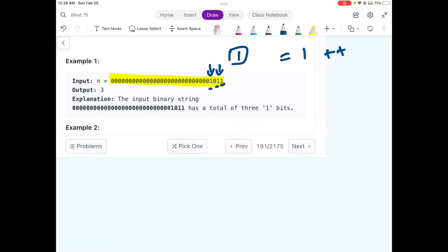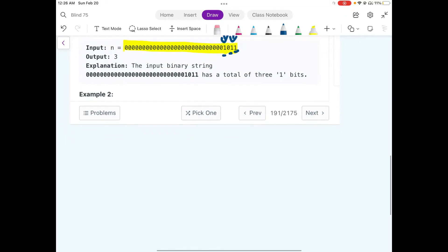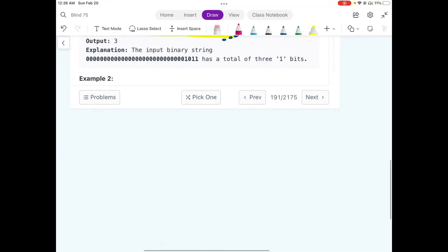And after running the loop for 32, all the 32 bits, we would just simply return the value of our counter. Let me show you by an example what I am trying to say.